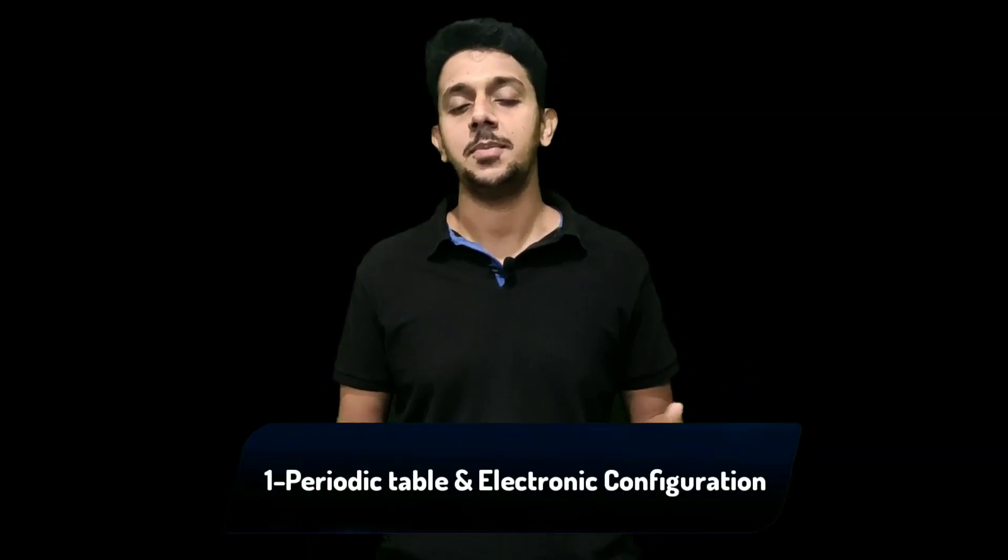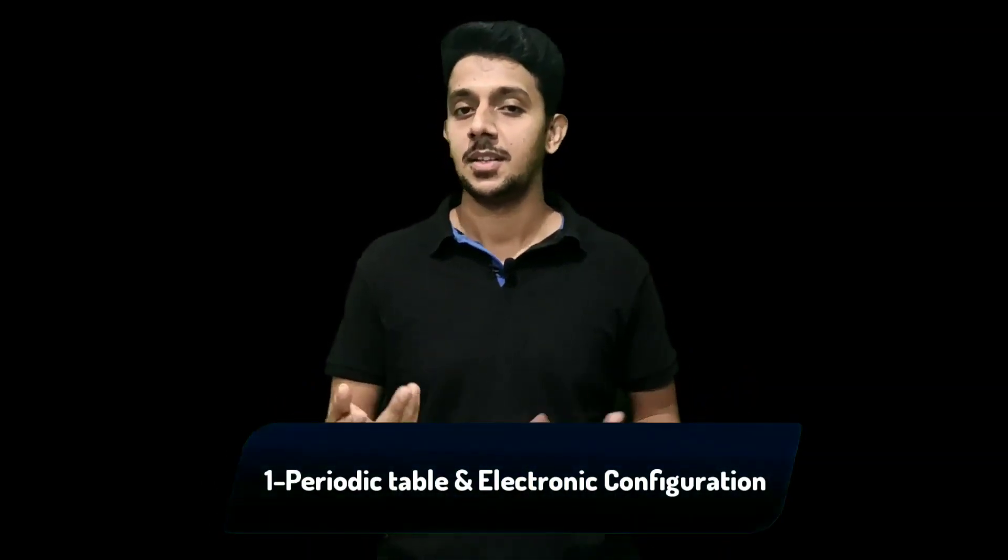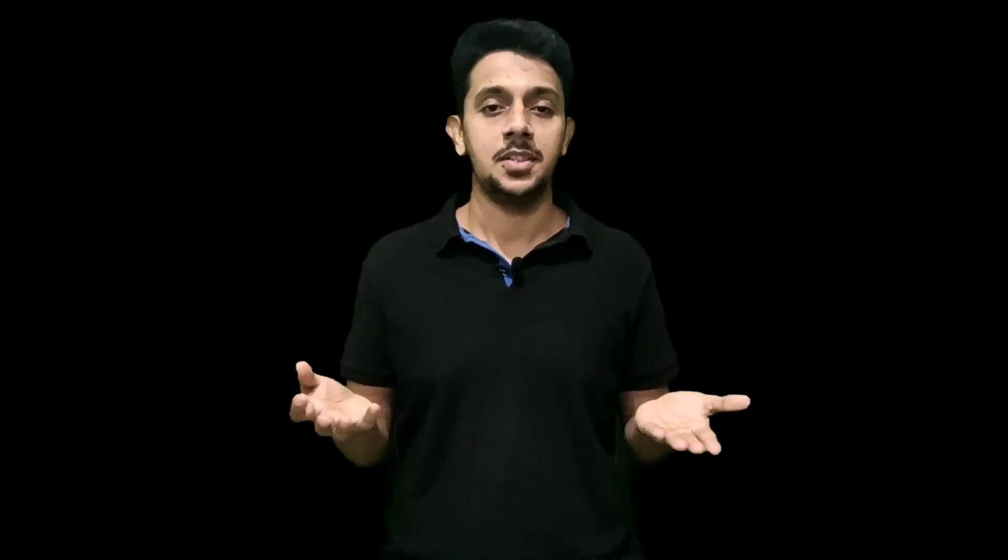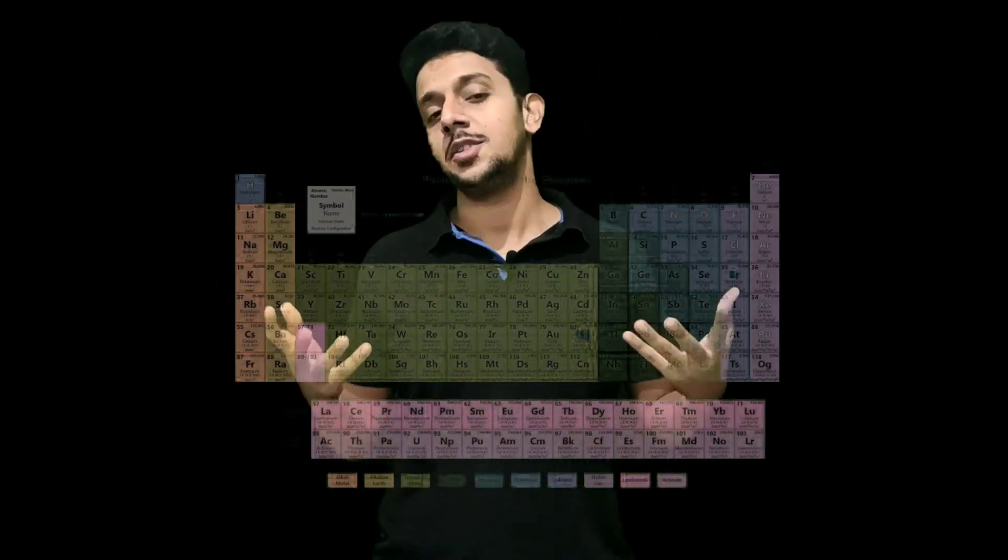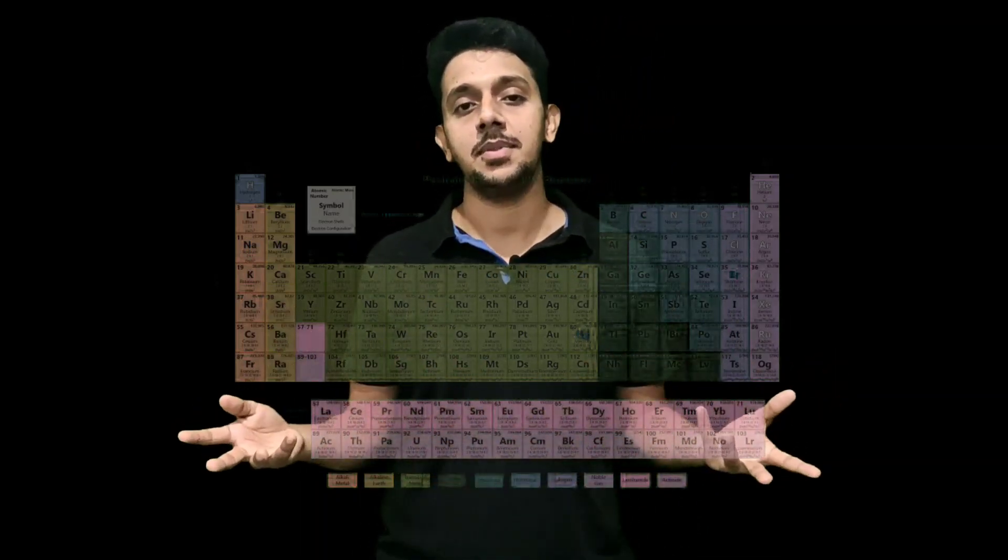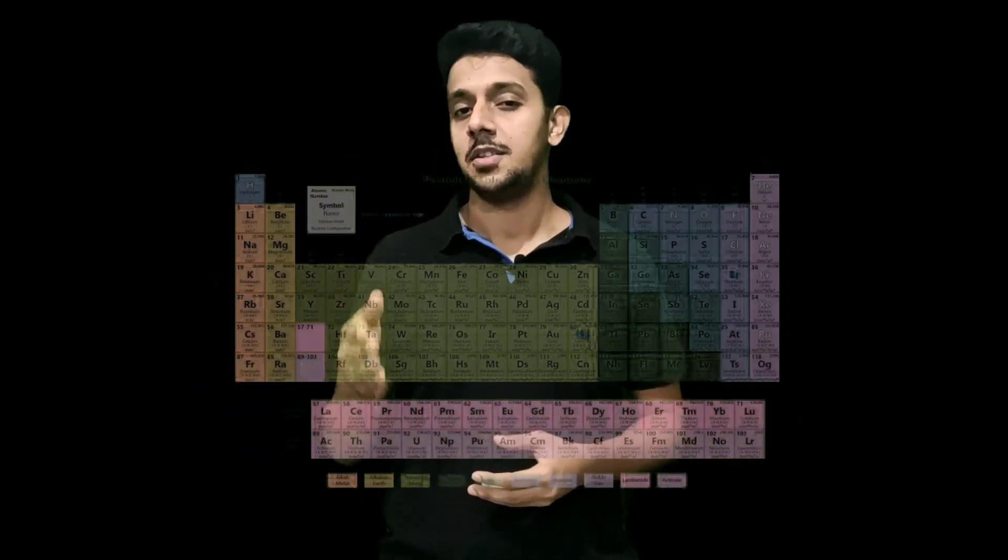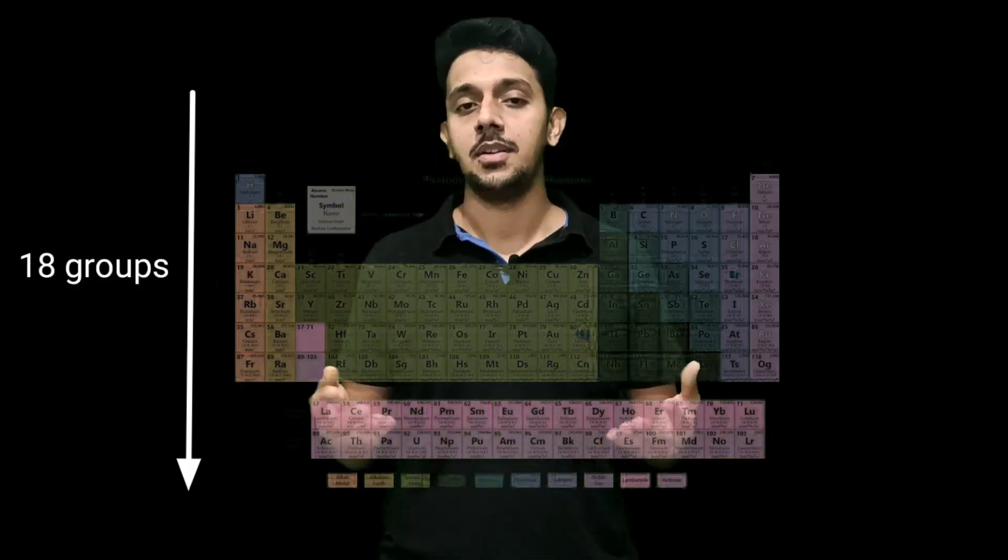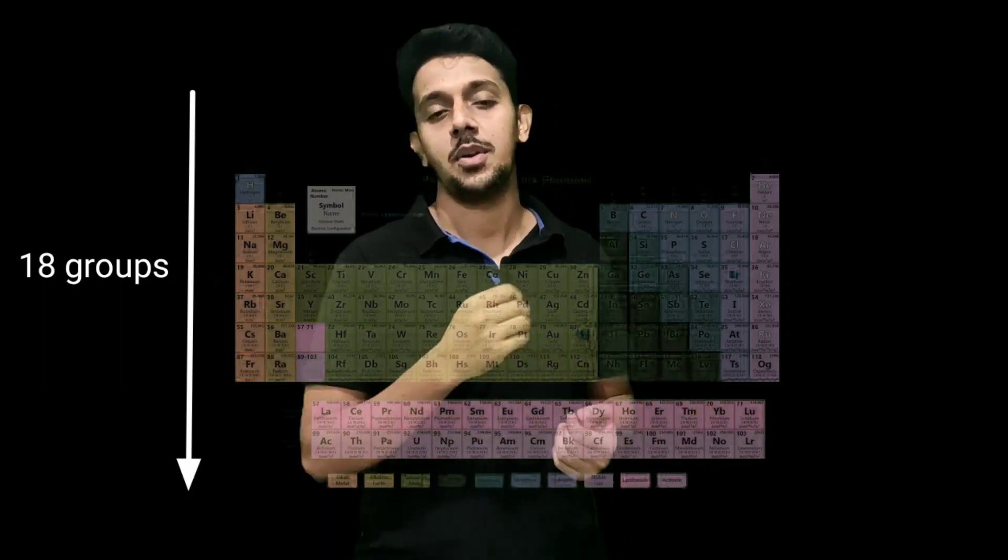SSLC chemistry, the first unit, is electronic configuration and the periodic table. In 9th standard we already learned about the modern periodic table. This is our modern periodic table with 118 elements arranged in increasing order of atomic number - 18 vertical columns called 18 groups and seven horizontal rows called seven periods.